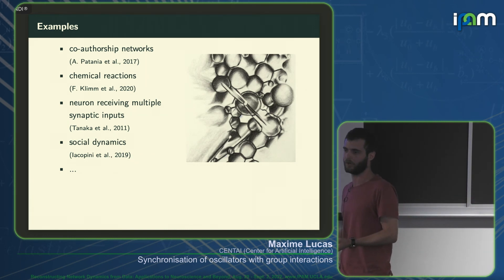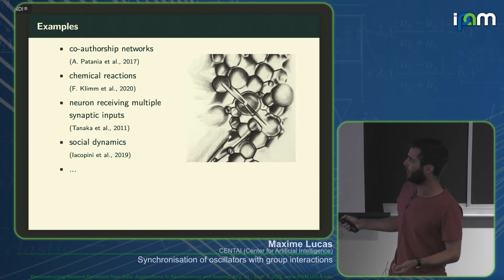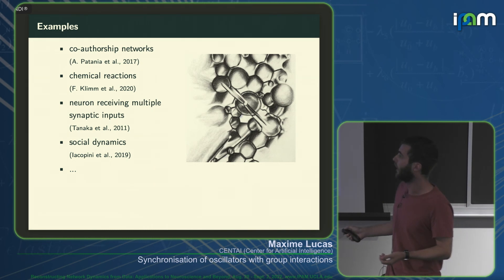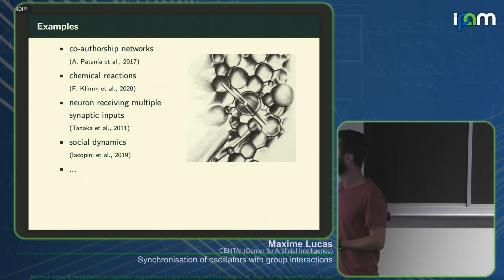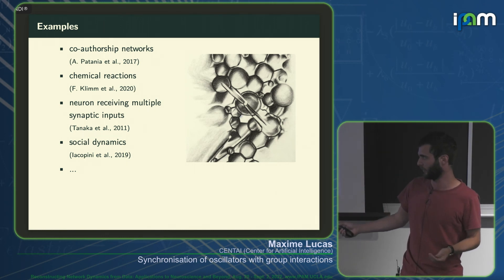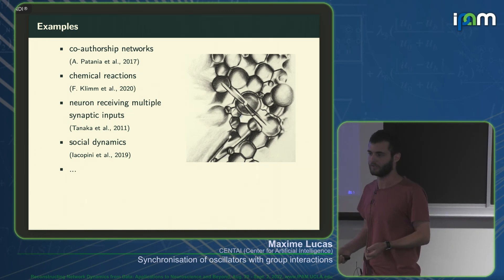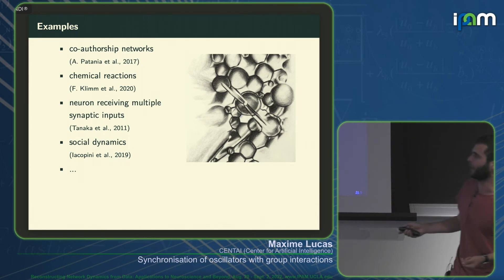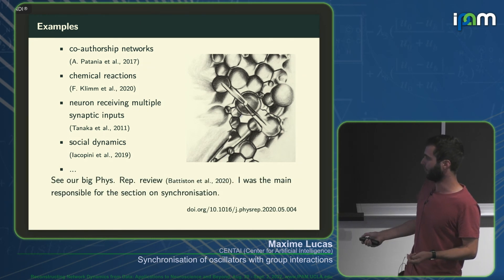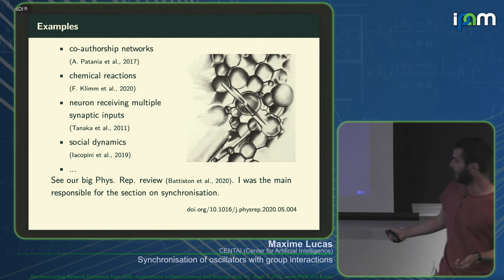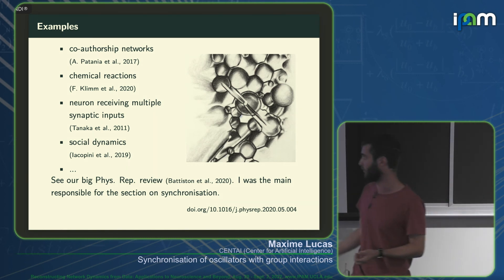Taking group interactions into account might change our understanding of the system. Some examples are co-authorship networks, but also multi-reactant chemical reactions, where sometimes you need at least three molecules or reactants to have a reaction. There are also neurons that receive multiple synaptic inputs, and reinforcement dynamics in social dynamics. We wrote a big review paper on all these group interactions covering structure and dynamics, and I wrote the main section on synchronization.